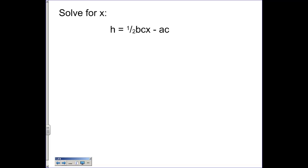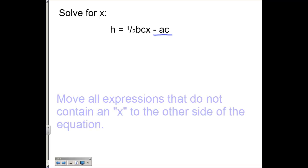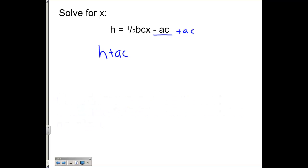We're going to solve for x. You'll see there's actually a whole series of numbers next to x. However, this part does not have an x. So I want to get rid of that first by adding ac. So on the other side, I have h plus ac, plus ac, and I still have a 1 half bcx.